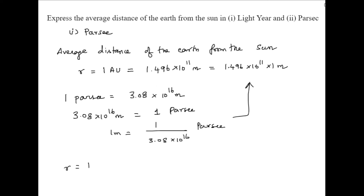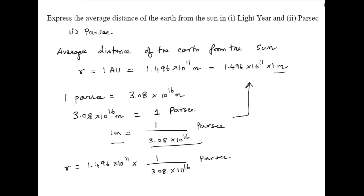Substituting into the equation: r is equal to 1.496 × 10¹¹, and in place of one meter we substitute 1 divided by 3.08 × 10¹⁶ parsecs. On solving this, we get r equal to 4.86 × 10⁻⁶ parsecs.